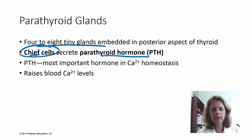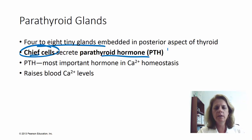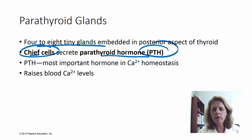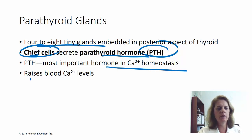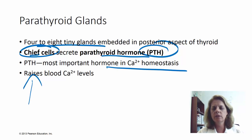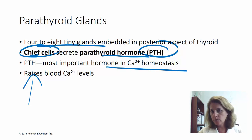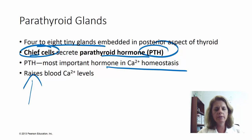Remember, the chief cells make parathyroid hormone, which we call PTH, and it's important in maintaining blood calcium levels — it's our important hormone for calcium homeostasis. When calcium levels are low, it will raise blood calcium levels. Calcium is important for bone health, nervous conduction, and muscle contraction, so there are lots of needs out there for calcium.